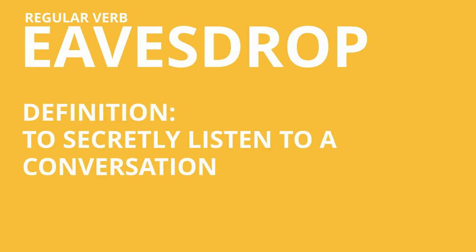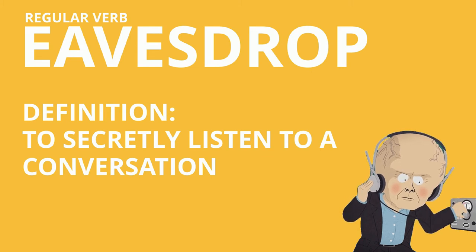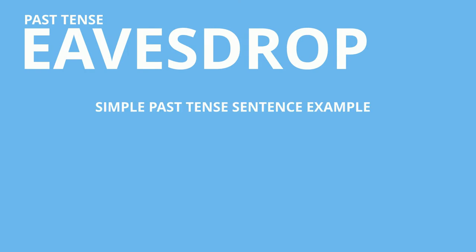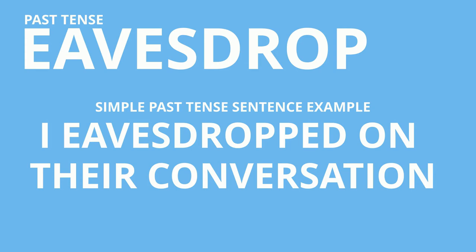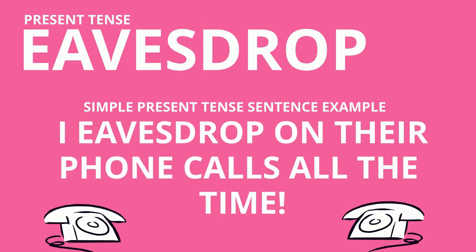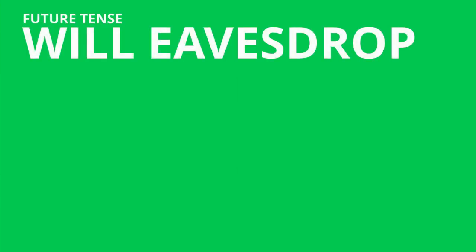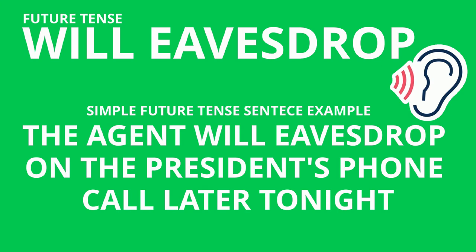Our next verb is a bit unusual: 'to eavesdrop.' The definition is to secretly listen to a conversation. This is a regular verb, so it stays the same in all tenses. In the present: 'I eavesdrop on their phone calls all the time.' In the future: 'The agent will eavesdrop on the president's phone call later tonight.'